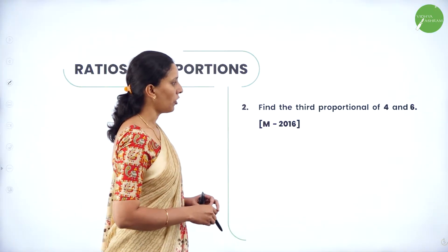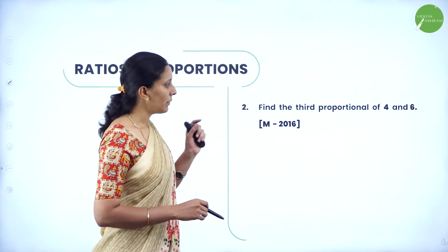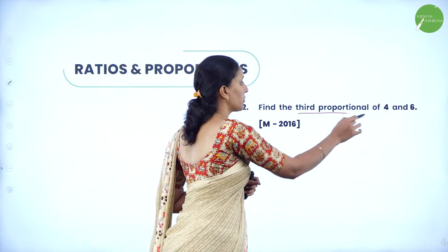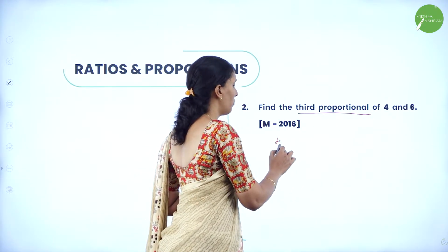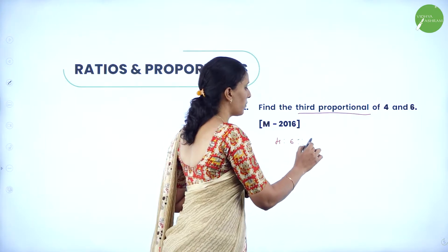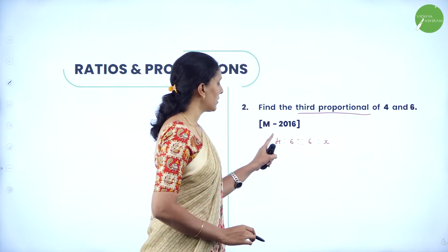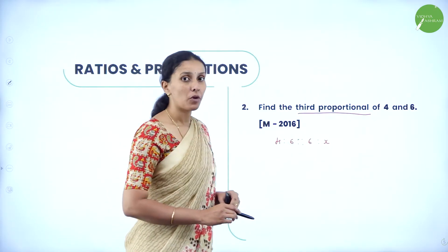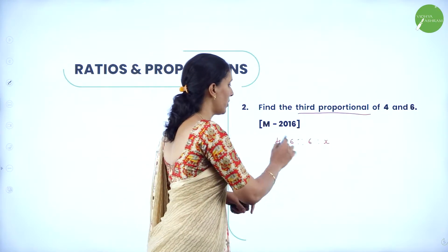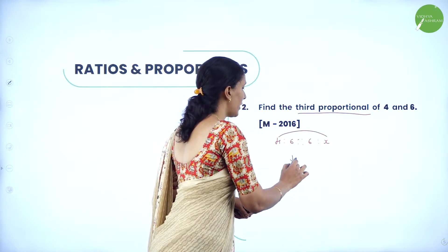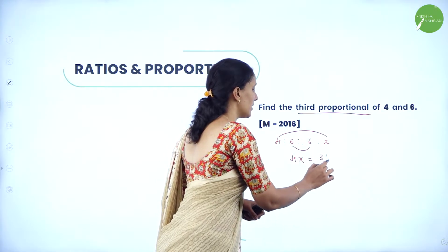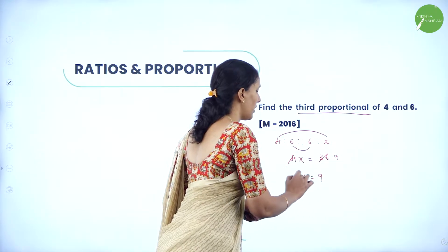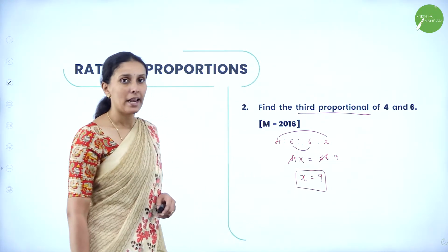Next question: find the third proportional of 4 and 6. When we say third proportional, the means will be the same value. So the third proportion is written as 4 is to 6 proportion 6 is to x. Using the property that product of means equals product of extremes, we get 4x = 6 × 6 = 36. So x = 9. The value of the third proportional is 9.